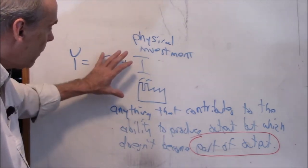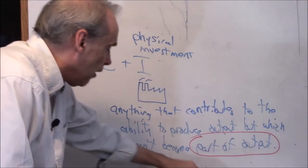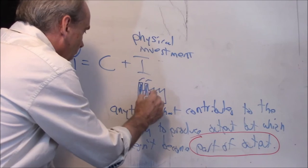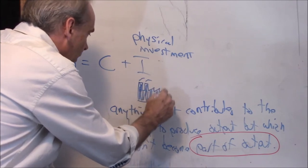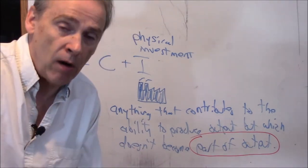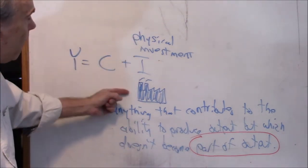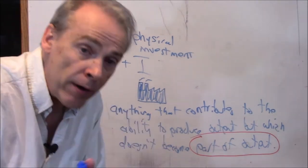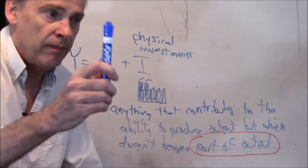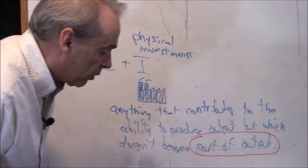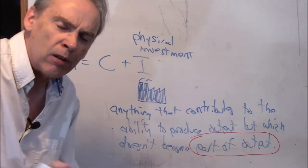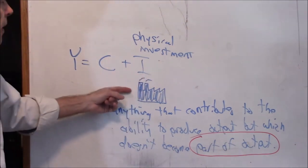TCU purchased this eraser and it doesn't become part of the output, so that's investment spending. On the other hand, the paper they print your diploma on — that's not investment spending because you take it with you. That's what investment spending is. If you always think of it as building a factory, you'll never go wrong. It's actually much broader than that, but you'll always come to the right conclusions about physical investment.